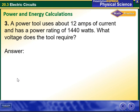Another example: a power tool uses about 12 amps of current and has a power rating of 1440 watts. Also right here, we have the current is given.